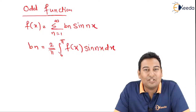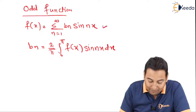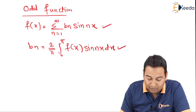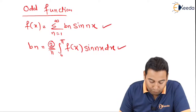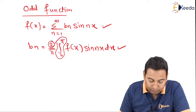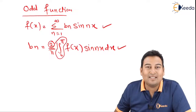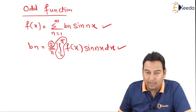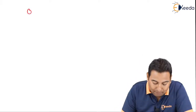If we have an odd function — sine is odd — that means bₙ will remain in the formula. The formula for bₙ is 2 times the integral from 0 to π. These are the formulas for even and odd. First of all, let us see how we are going to check whether a function is even or odd. Let me give you a few examples.